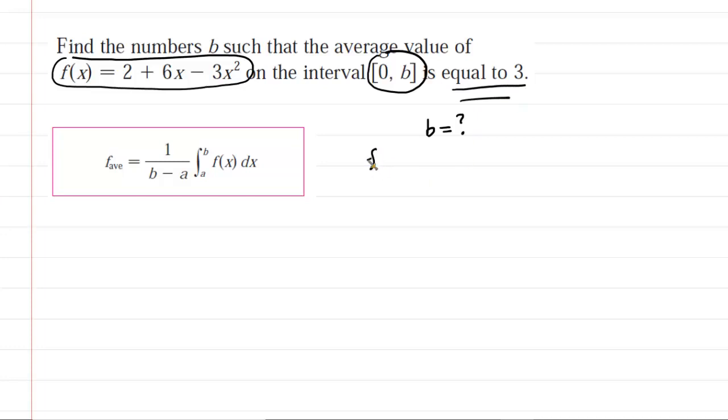So that right there is telling us that the average value, f average, if you will, is equal to 3. Now, of course, we have the equation that we use to find the average value of a function. What's weird about this scenario is that they gave us the average value. We're not looking for it.